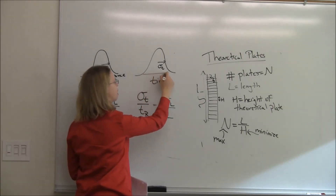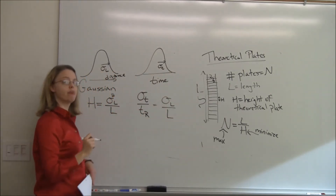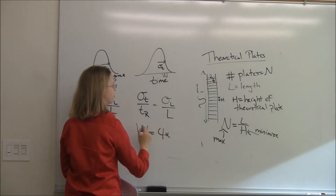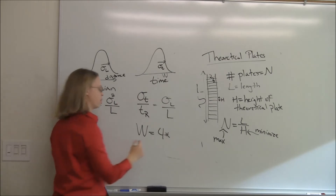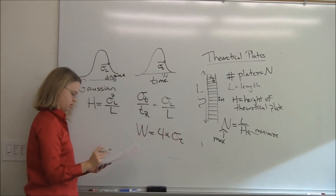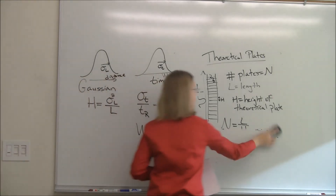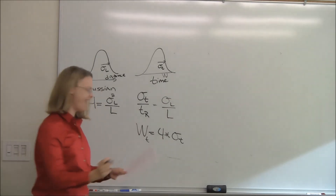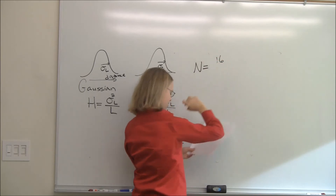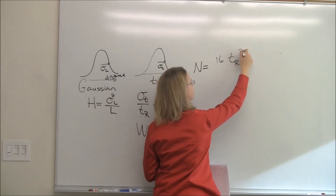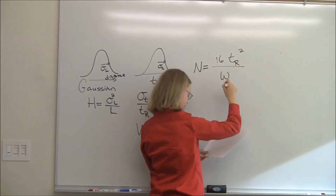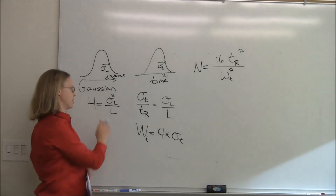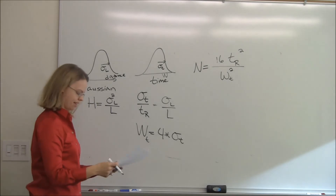Chromatographers also talk about the width at the base of the peak. The width is defined as four standard deviations — two on either side — which captures about 99% of the peak area. So width in time units equals 4 times sigma_t. If we plug these definitions back into N equals L over H, we get N equals 16 times T-sub-R squared over w squared, where w is the peak width in time units.